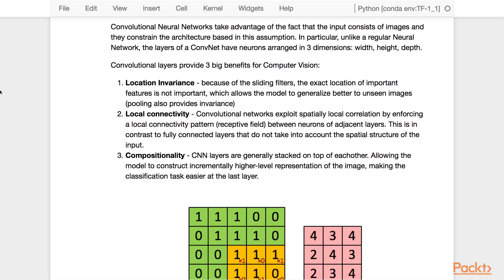Three, compositionality. CNN layers are generally stacked on top of each other, allowing the model to construct incrementally high-level representations of the image, making classification tasks easier at the last layer.